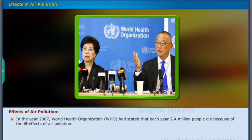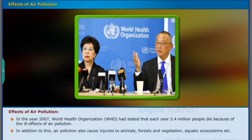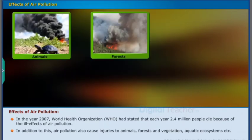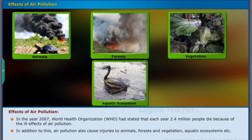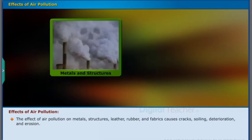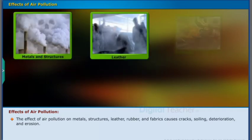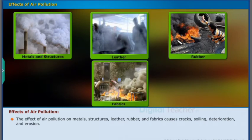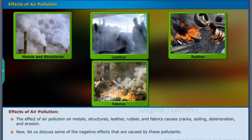In the year 2007, the World Health Organization (WHO) stated that each year 2.4 million people die because of the ill effects of air pollution. In addition to this, air pollution also causes injuries to animals, forests and vegetation, and aquatic ecosystems. The effect of air pollution on metals, structures, leather, rubber, and fabrics causes cracks, soiling, deterioration, and erosion.